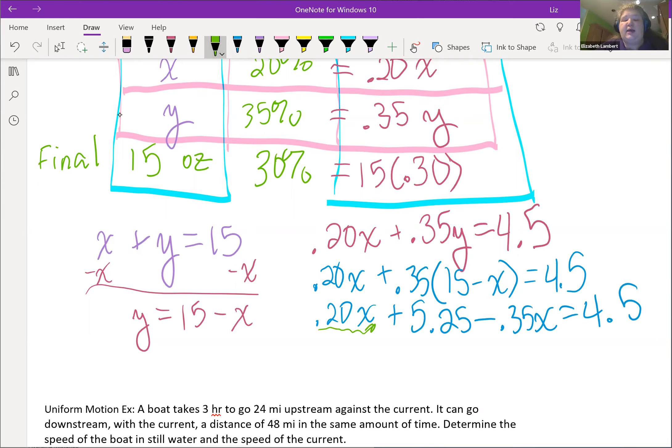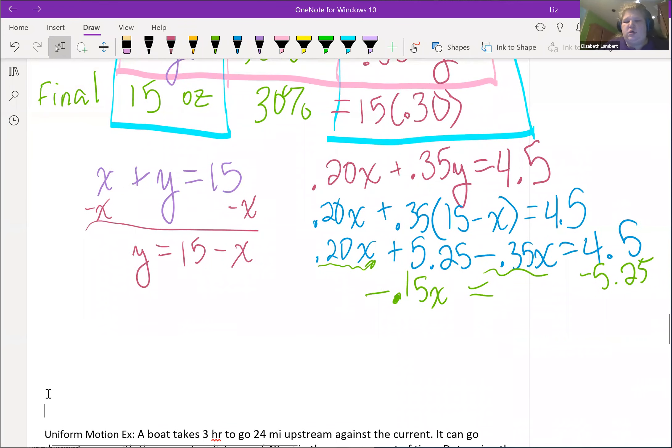So 0.20x minus 0.35x is a negative 0.15x. And then I'm going to minus the 5.25 over here, just because the way I wrote this I'm running out of room, but I can make more room. Let me actually... and that is negative 0.75.